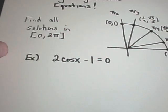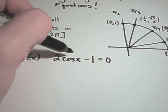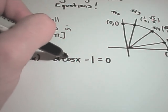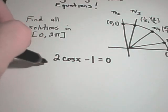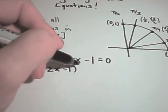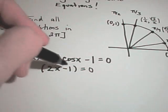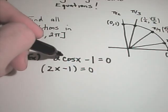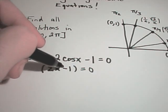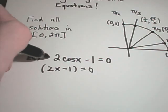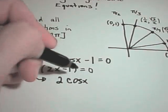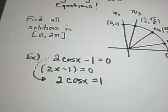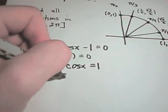To solve 2cos(x) − 1 = 0, if I see cosine to the first power, I treat it the same way I'd solve 2x − 1 = 0: add 1 to both sides and divide by 2. So we get 2cos(x) = 1, and then cos(x) = 1/2.